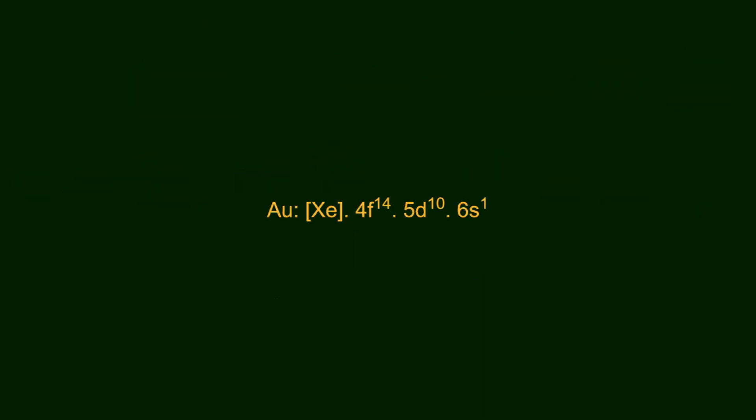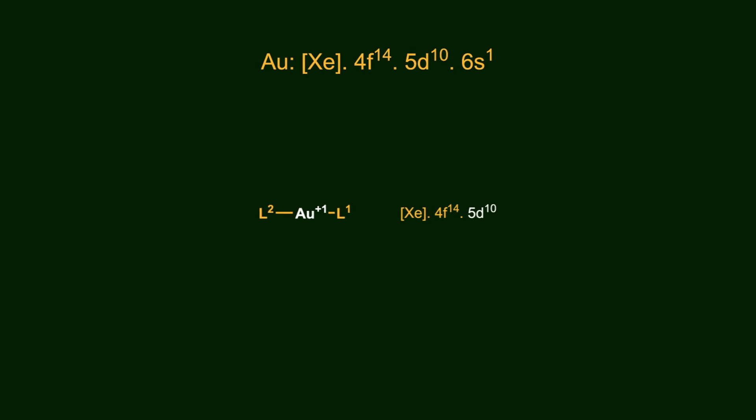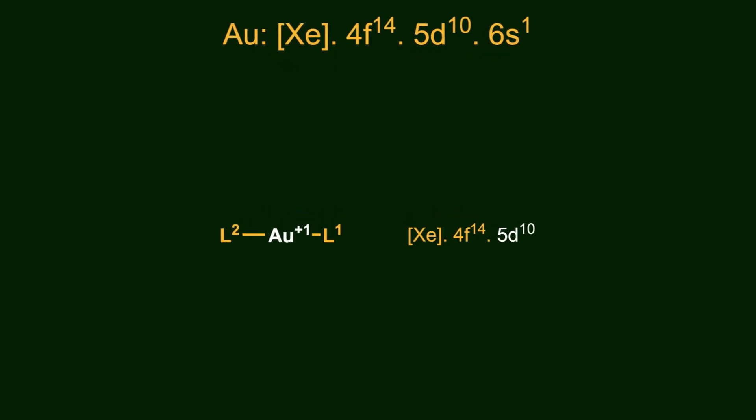First of all, let's tackle a fundamental question: what sets gold apart from other metals? In the +1 oxidation state, gold has a filled D-shell, making it behave more like a main group element. It forms linear, two-coordinate complexes but exhibits very little tendency to interact with donor ligands perpendicular to the molecular axis.